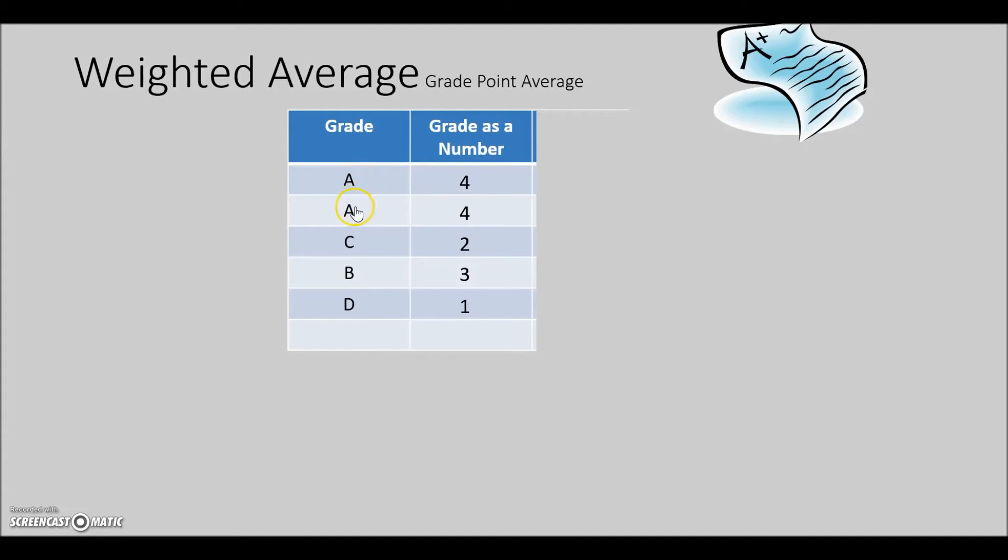Since we have an A in the first two courses, we'll put a four, a C would be two, B is three, and a grade of D would be one point.